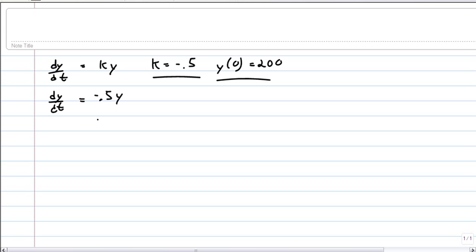So dy/dt is negative 0.5 times y. You're going to separate the variables to solve that. I'm going to multiply both sides by dt, and I'm actually going to multiply both sides by 1 over y, kind of another way to do it.